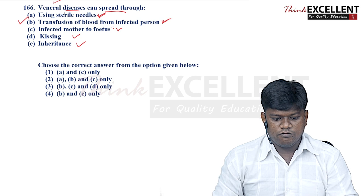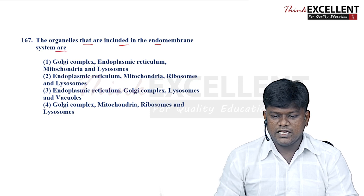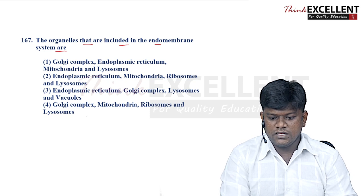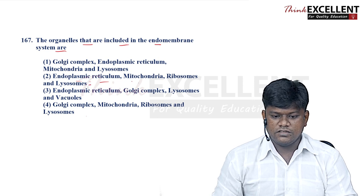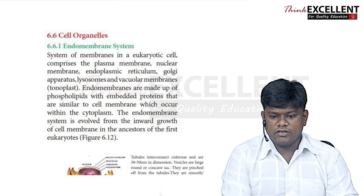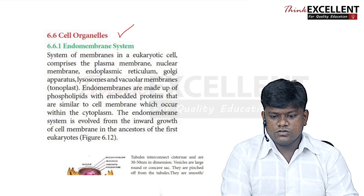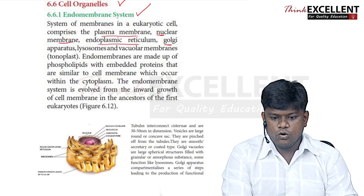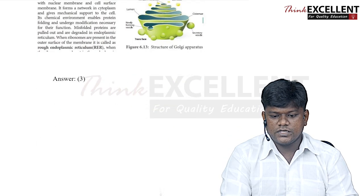Question 167: organelles included in the endomembrane system — options include endoplasmic reticulum, Golgi complex, mitochondria, ribosomes, and lysosomes. The endomembrane system includes plasma membrane, nuclear membrane, endoplasmic reticulum, Golgi apparatus, lysosomes, and vacuolar membrane (tonoplast). Mitochondria and ribosomes are not part of the endomembrane system. So option 3 — endoplasmic reticulum, Golgi complex, lysosomes, and vacuoles — is the right answer.